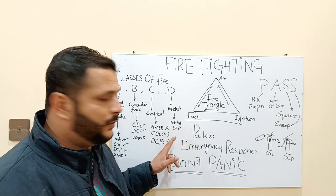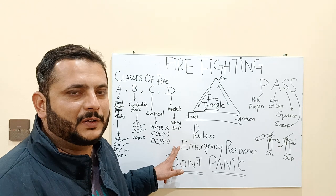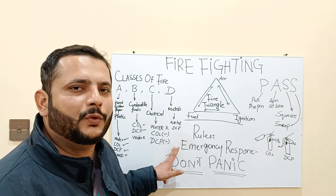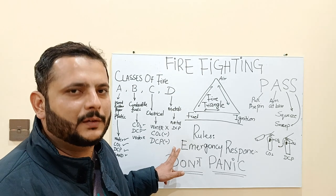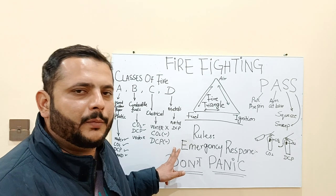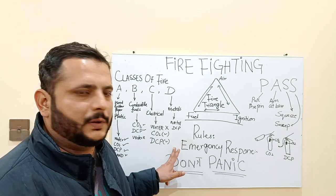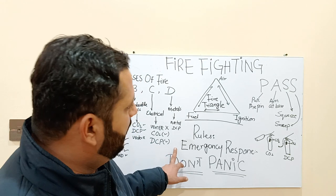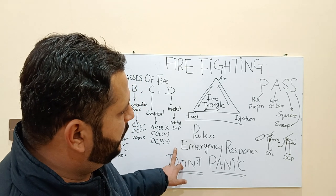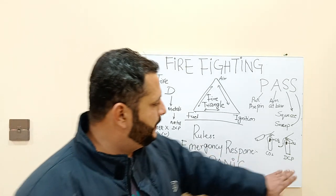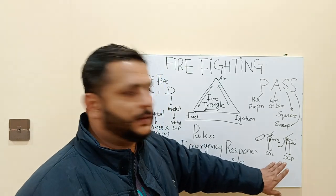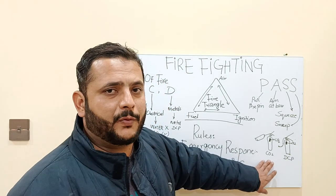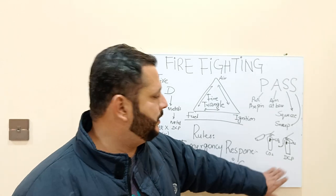If you don't have CO2 available, then you have to go for DCP because extinguishing the fire is your main response. Now we come towards the DCP and CO2 fire extinguisher types.